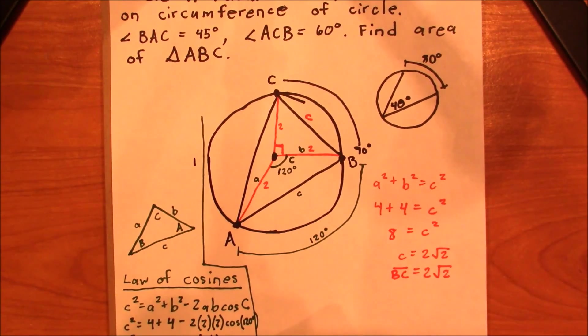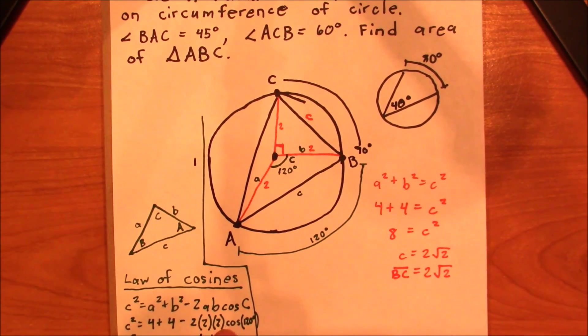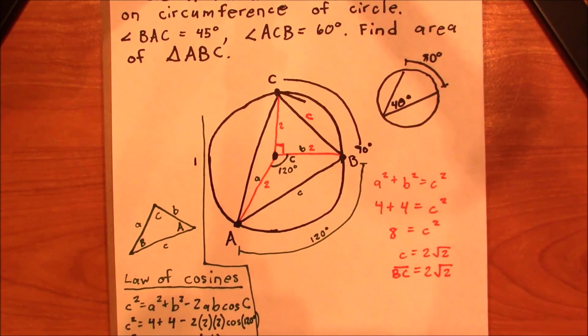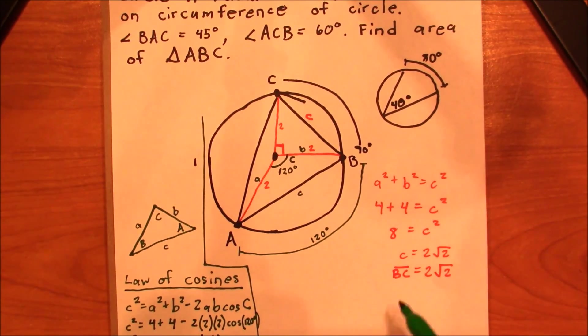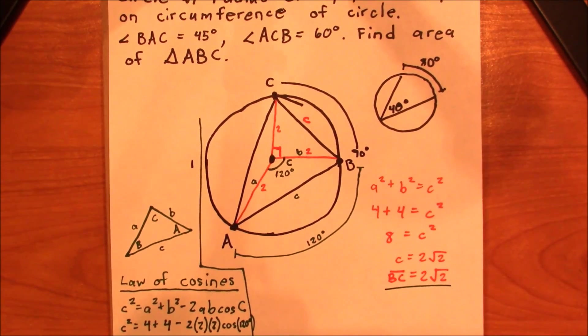And this c that I've used here is this line, which is really just AB. Okay. So now we have two side measurements. We have AB and we have BC. We also have the angle B.